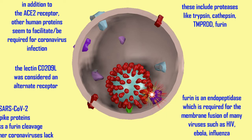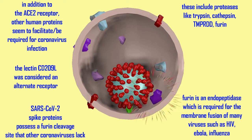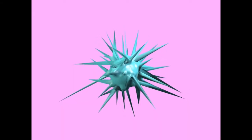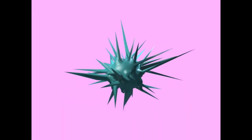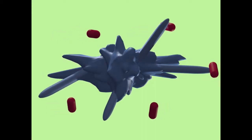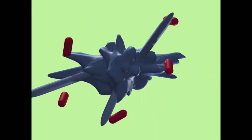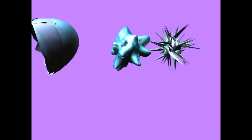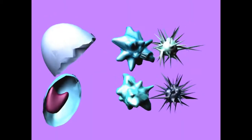Some may actually perform more than one function, and many have implications in host specificity and virulence. For example, macrophages — a human immune cell — should be able to identify the double-stranded RNA of a virus and mount an immune defense against it.